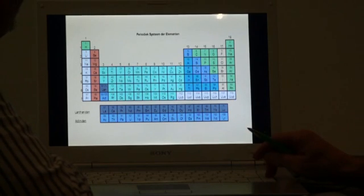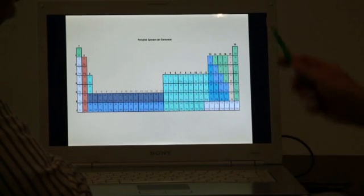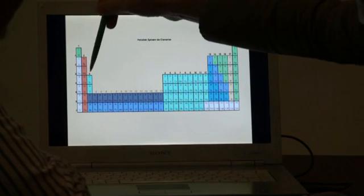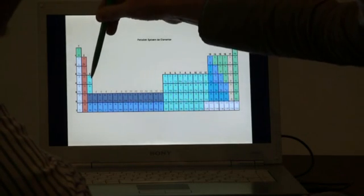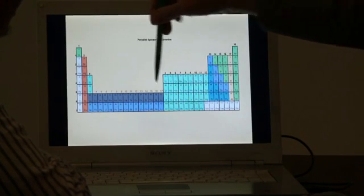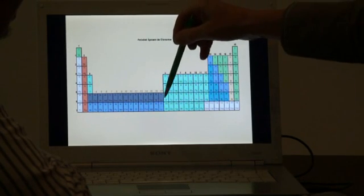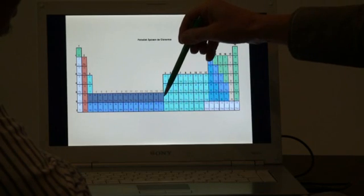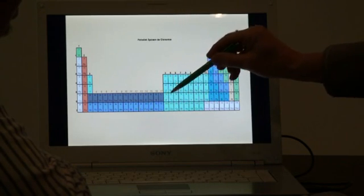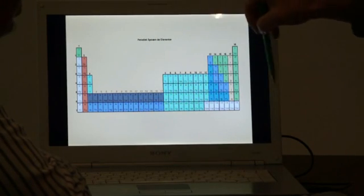That's why I prefer to present the periodic system in this way. Then you can see that what happened with scandium, something alike happens with lanthanum to lutetium. So from lanthanum to lutetium, the new electrons fill the electron shell of the iron series.